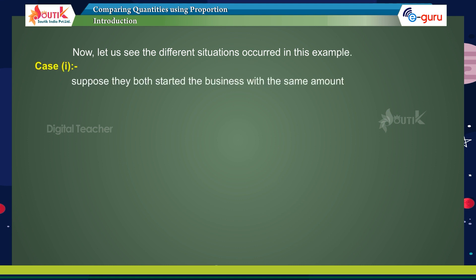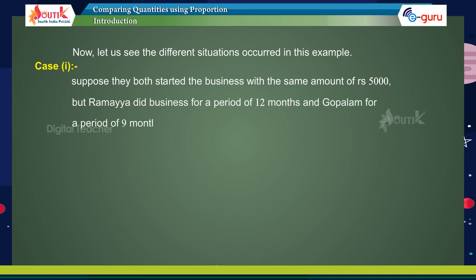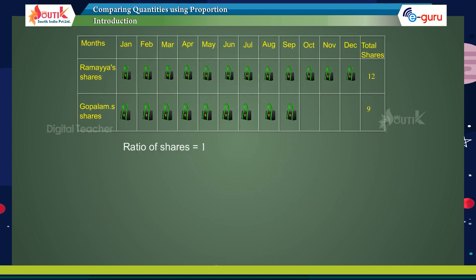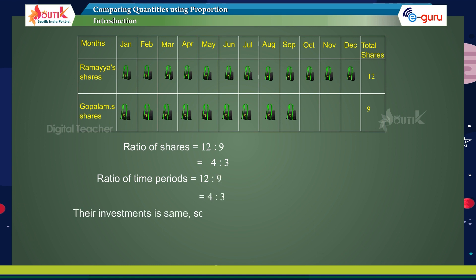Case 1: suppose they both started the business with the same amount of rupees 5,000, but Ramayana did business for 12 months and Gopalam for 9 months. Ratio of their investments equals 5,000 is to 5,000, which equals 1 is to 1. Ratio of shares equals 12 is to 9, which equals 4 is to 3. Ratio of time periods equals 12 is to 9, which equals 4 is to 3. So they share the profit in the ratio of their time period, that is 4 is to 3.